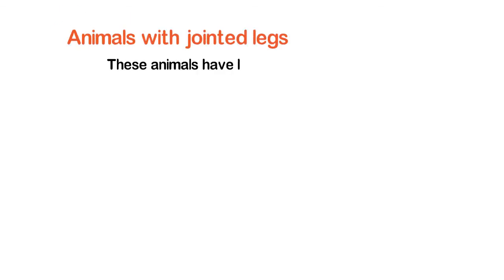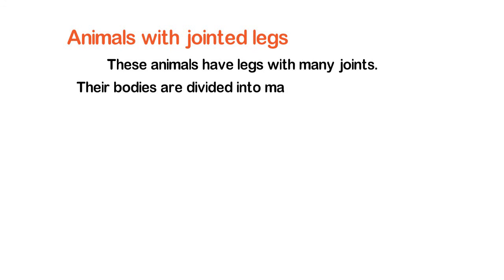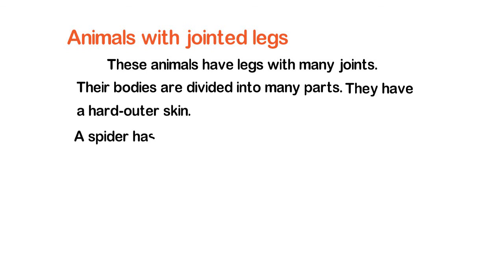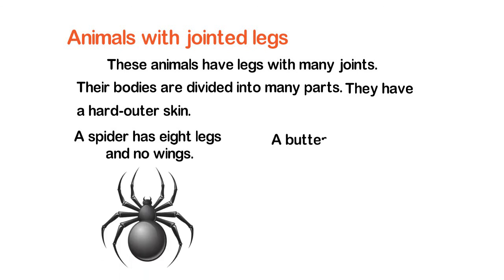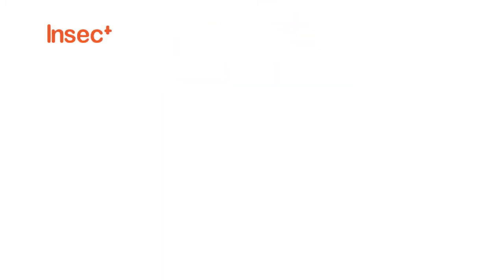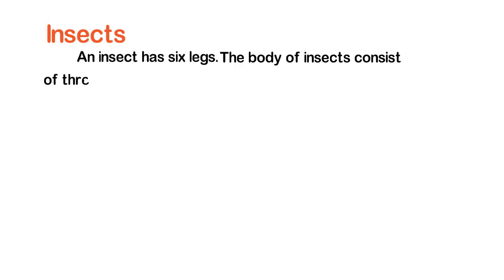Animals with jointed legs have legs with many joints and their bodies are divided into many parts. They have a hard outer skin. A spider has eight legs and no wings. A butterfly has six legs and four wings. A crab has ten legs and no wings. An insect has six legs, and the body of an insect consists of three parts: the head, the thorax, and the abdomen.